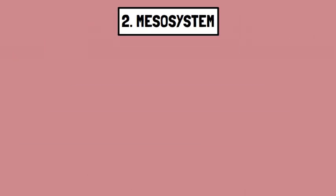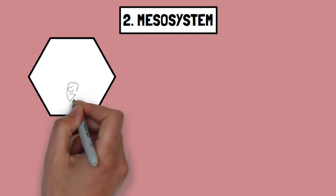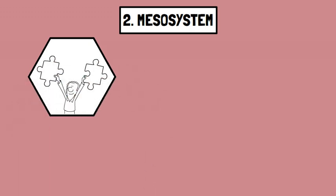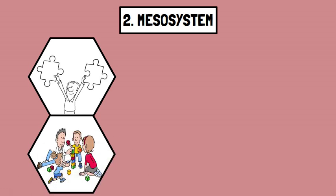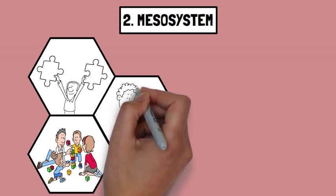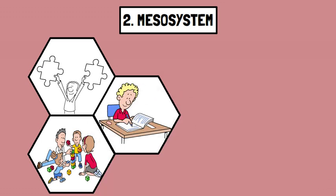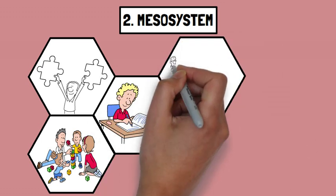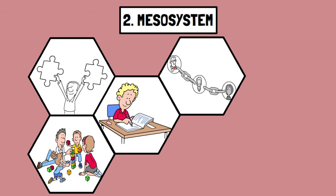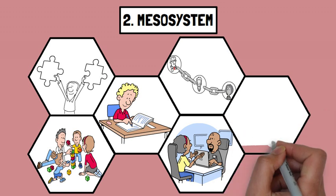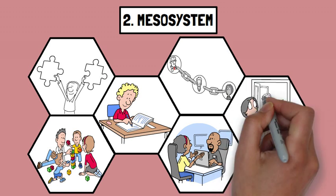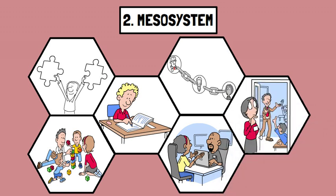Number two: Mesosystem. This layer involves the connections between different microsystems. For instance, if a child's parents are involved in their school activities, there is a positive impact on the child's academic performance and social skills. Imagine a situation where a teacher communicates regularly with a child's parents about the child's progress — this interaction can lead to improved educational outcomes and a stronger support system for the child.